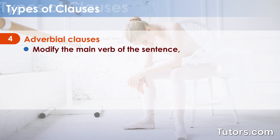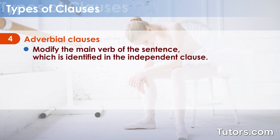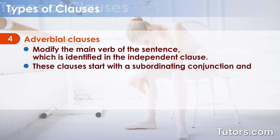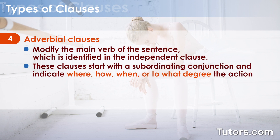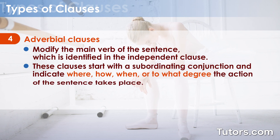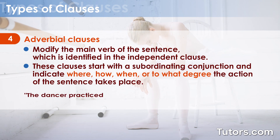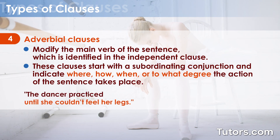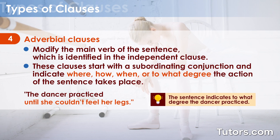Adverbial clauses modify the main verb of the sentence, which is identified in the independent clause. These clauses start with a subordinating conjunction and indicate where, how, when, or to what degree the action of the sentence takes place. In this example, "until she couldn't feel her legs" describes to what degree the dancer practiced.